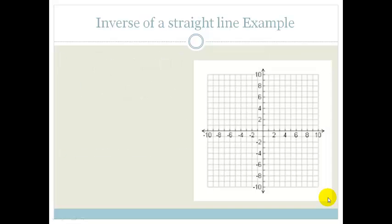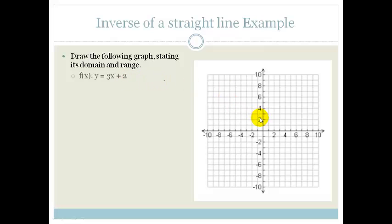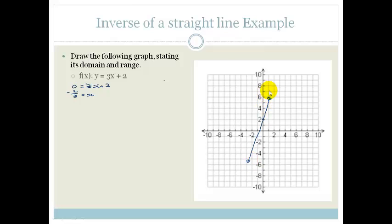Let's do an example. It says: draw the following graph stating its domain and range. So it's got y = 3x + 2. We know it goes through +2 on the y-axis. To find where it crosses the x-axis, we let y = 0: 0 = 3x + 2, so x = −2/3. We draw the straight line. The domain, because it's a straight line, is x ∈ ℝ, and the range is also y ∈ ℝ.